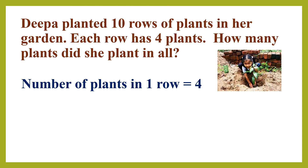First step: number of plants in one row. Read the question properly — how many plants did she plant in one row? Each row has 4 plants, so we have to write 4 there.